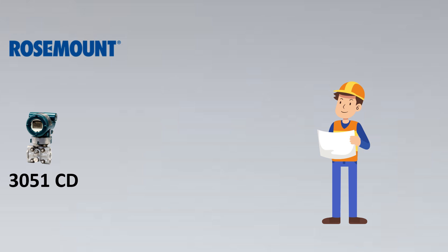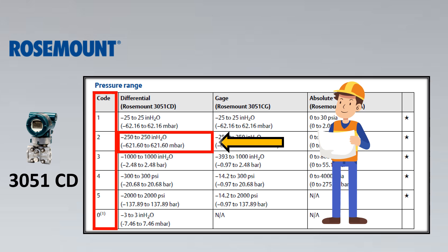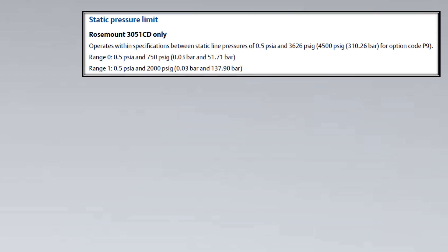Looking at the Rosemount 3051CD catalog, there are various codes — one, two, three, four, five. For this differential pressure transmitter, we can select any range. For example, selecting range 2 depends on the DP pressure range that the process gives us.